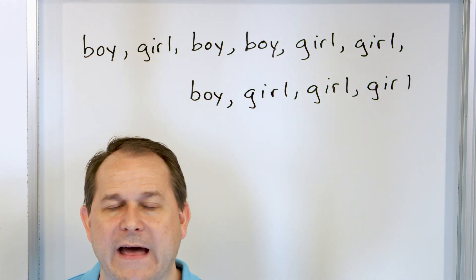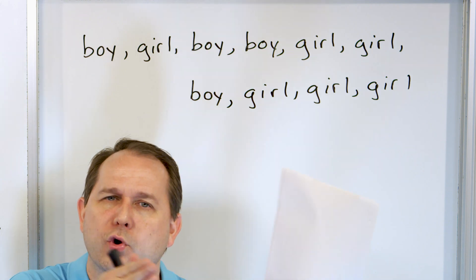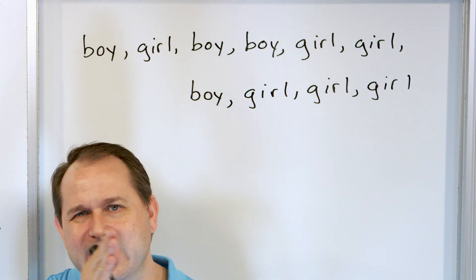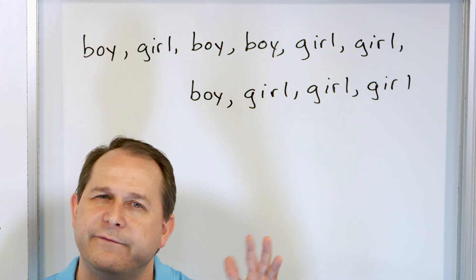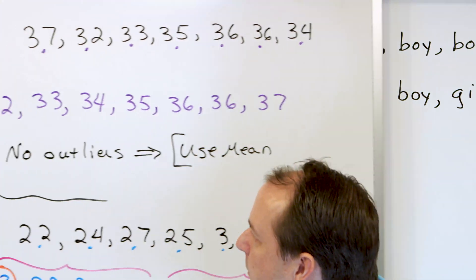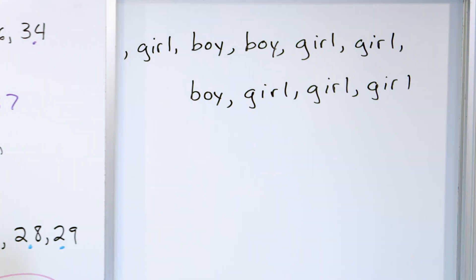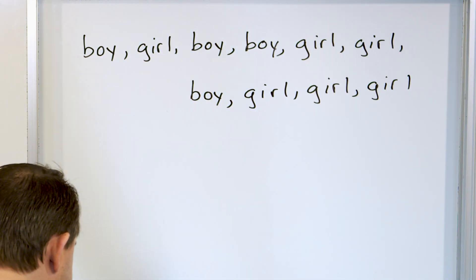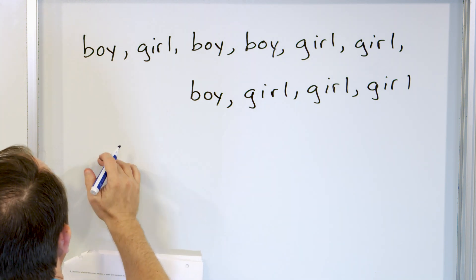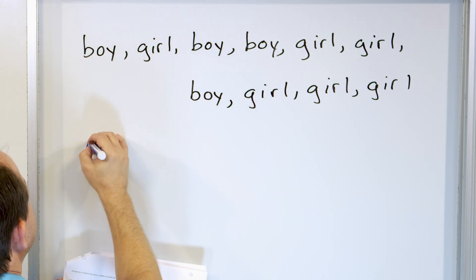How would you find the average value of this? You can't find the average of boy and girl. How would you find the median? It would be difficult — you can't order it from least to greatest, since you can't determine which is least between boy and girl. So it's very hard to figure out the median either. That's why, when you have non-numerical data, you use the mode.